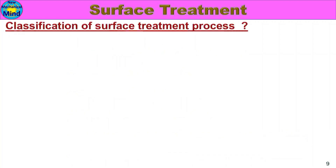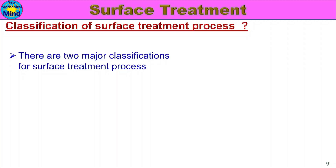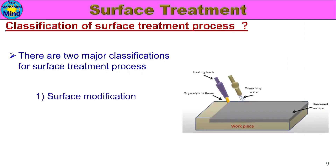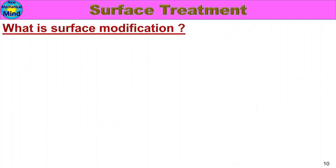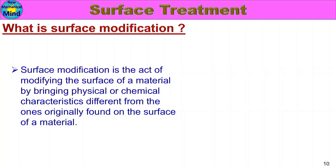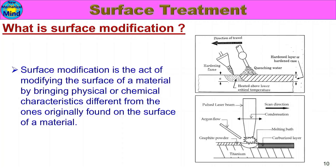First, the classification of surface treatment process. Surface modification refers to changing a material's surface so that the characteristics are different from those originally found on the surface. Surface modification changes the physical properties or chemical properties of the material surface from its original condition.